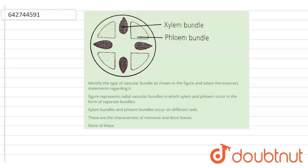The question is: identify the type of vascular bundle as shown in the figure and select the incorrect statement regarding it. So they have shown the figure and here we have to focus on the incorrect statement, the wrong statement.